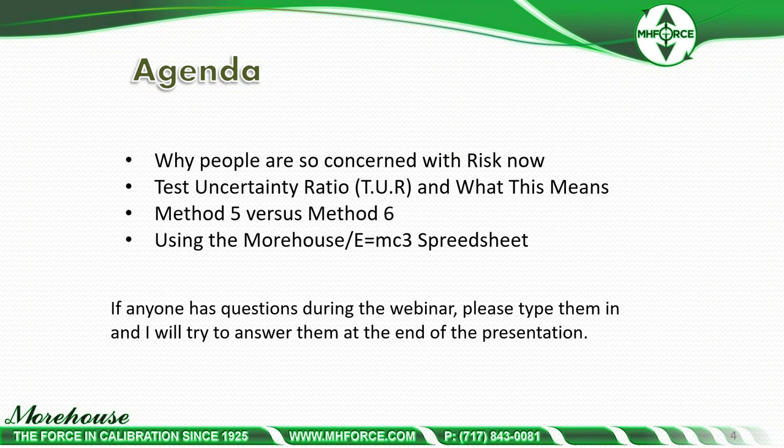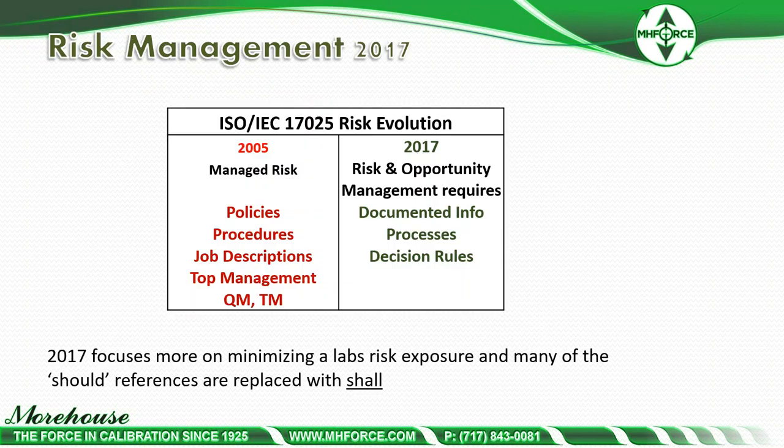If anyone has questions, type them in the chat bar. Our agenda for today covers why people are so concerned with risk now — it was part of the 2005 standard — test uncertainty ratio and what it means, Method 5 versus Method 6, and using the Morehouse E equals MC3 spreadsheet created by Dilip Shah. The 2005 standard managed risk through policies, procedures, job descriptions, and top management roles.